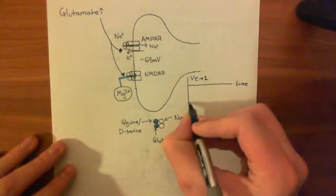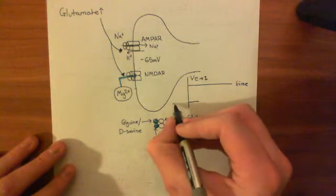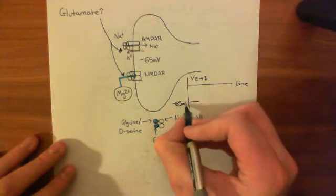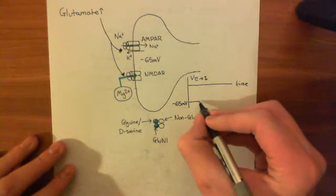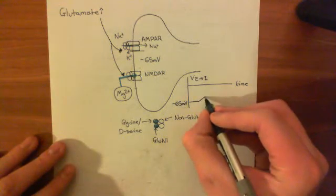Initially, what it's going to start off with is at minus 65 millivolts, but as you bring in positive charge, that's going to depolarize the membrane. So it's going to go something like this.